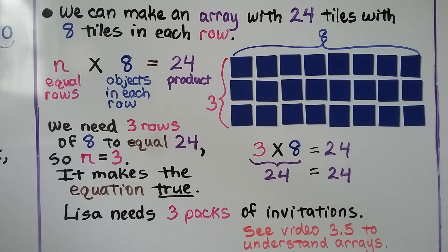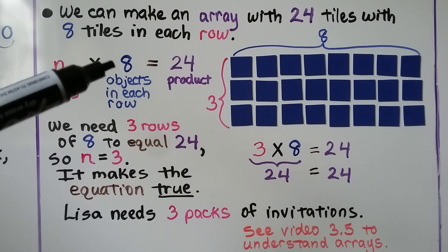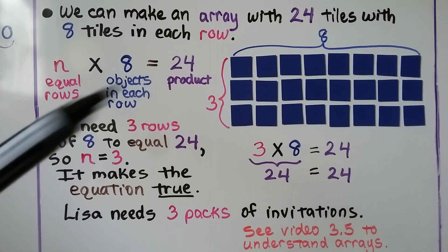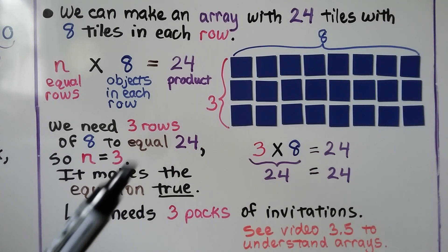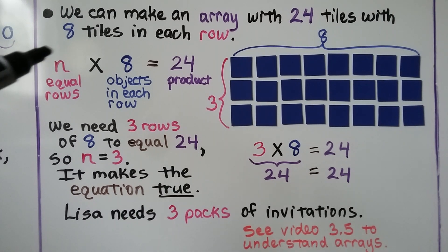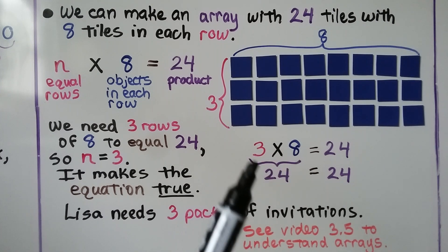We can make an array with 24 tiles with 8 tiles in each row. We have n, for the number of packs, times 8 — that's how many invitations are in each pack — equal to 24, the product. We make rows of 8 until we have 24, and we see that we made 3 rows. So n is equal to 3, meaning 3 times 8 equals 24. Lisa needs 3 packs of invitations.